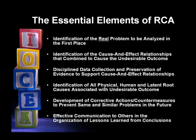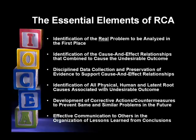Our next essential element: identification of all the physical, human, and latent root causes associated with the undesirable outcome. This means we're not only interested in the forensic or physical side of the failure, but more interested in understanding why people made bad decisions — whether judgment calls or flawed data. We are interested not necessarily in who made a bad decision, but why they thought it was the right decision at the time. This delves into our system deficiencies — our policies, procedures, and practices.